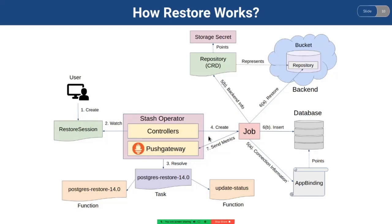Then it creates a job to restore the target. The job reads the necessary information to connect with the database from the AppBinding CRD, which contains the connection information of the database.